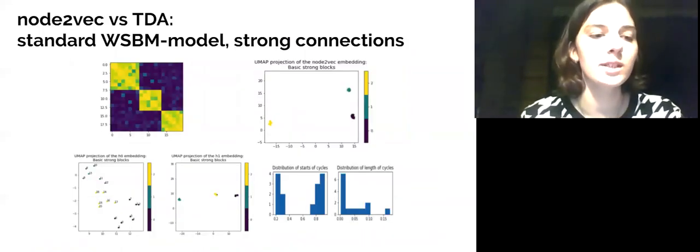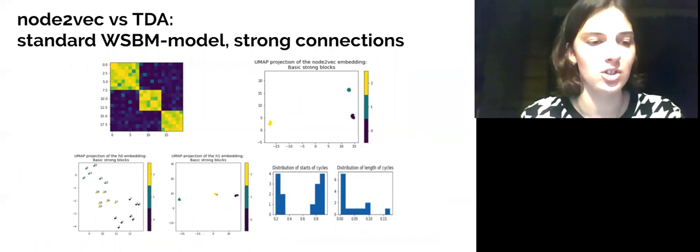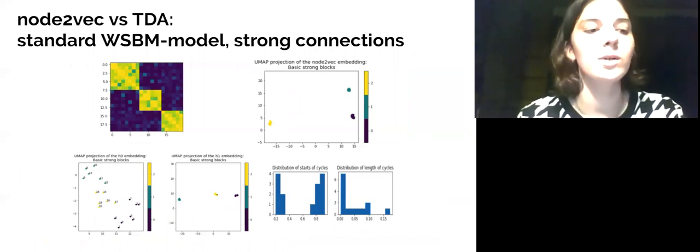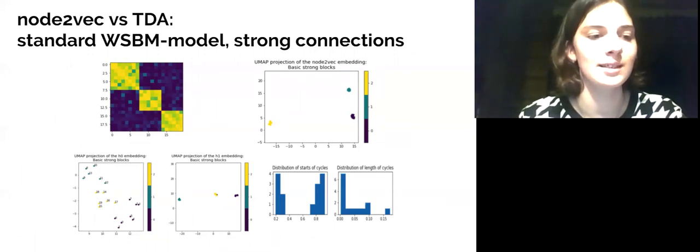The quality of the embedding was compared based on node classification task performance. We didn't use any standard classification metrics, but applied dimensionality reduction technique UMAP for visualization of results.